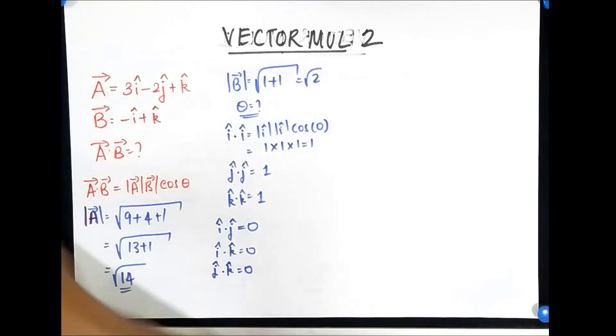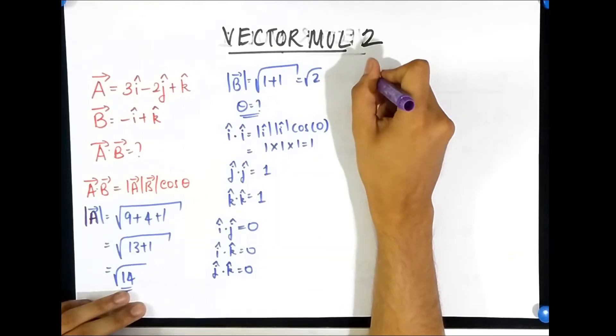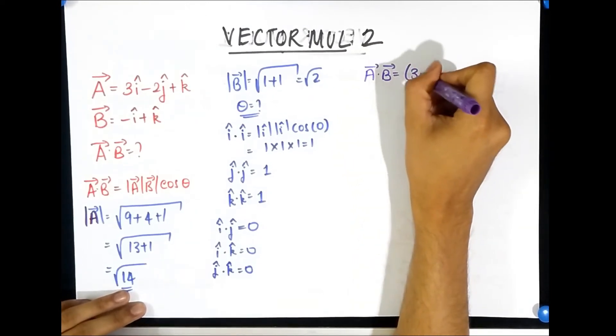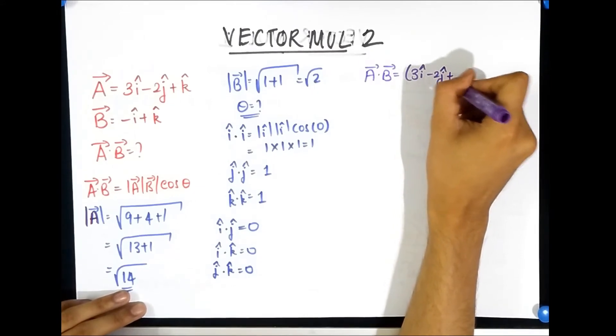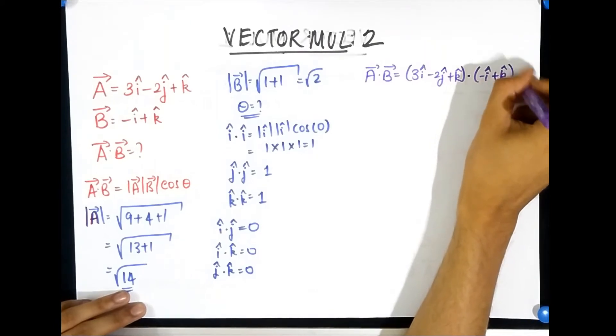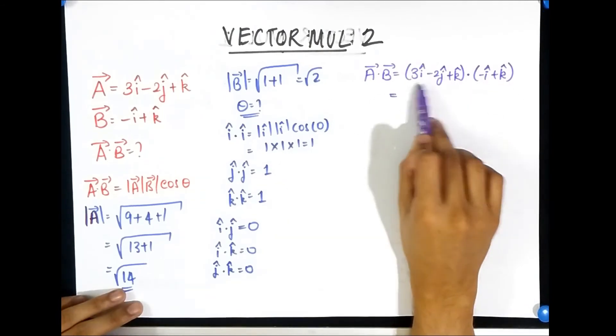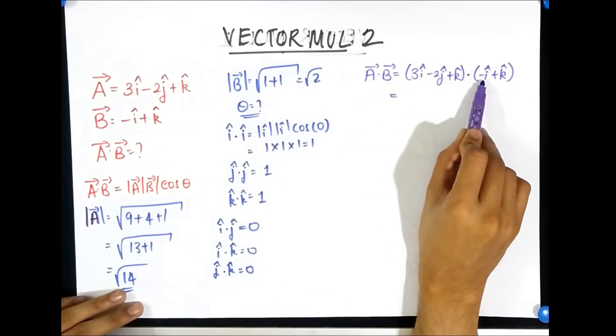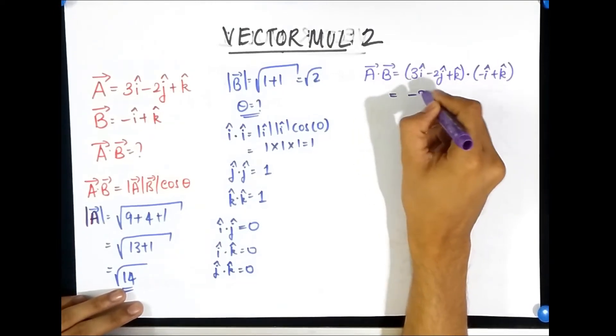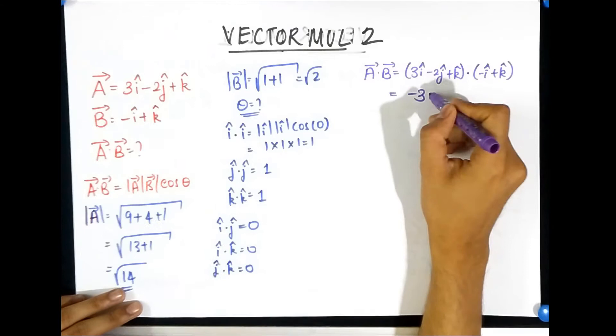That means we can now solve this vector instead of using this method of polar format we can just directly dot them using distribution method so we'll use distributed property. So I'm just going to substitute 3i cap minus 2j cap plus k cap dot minus i cap plus k cap, so I'm going to distribute them, you know just like when you multiply. Now let's distribute them smartly, 3i cap dot minus i cap, what do you get? Well 3 times minus 1 gives you a minus 3, and then you have i dot i, well we saw that, i dot i is one, so that's just one.